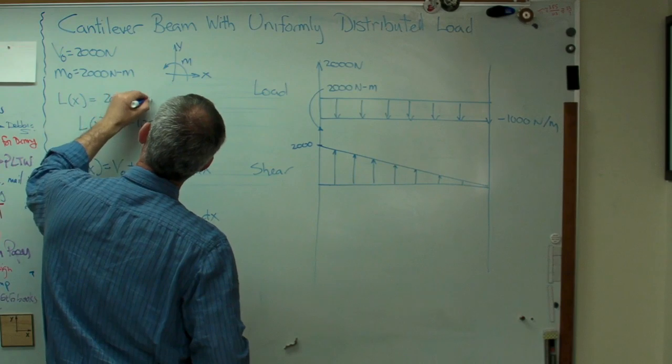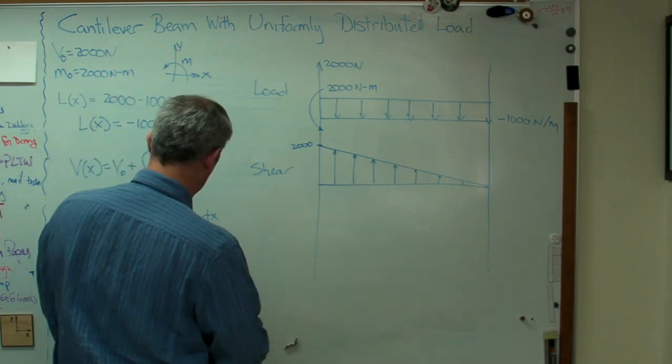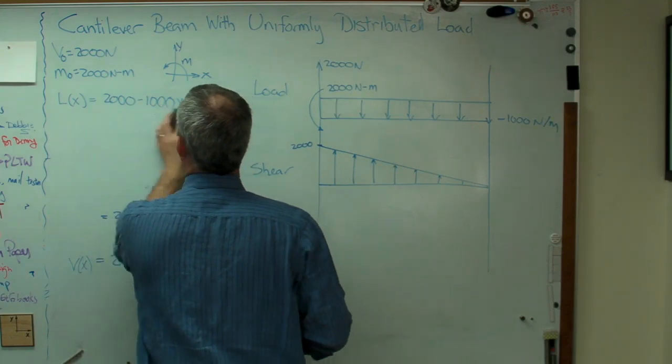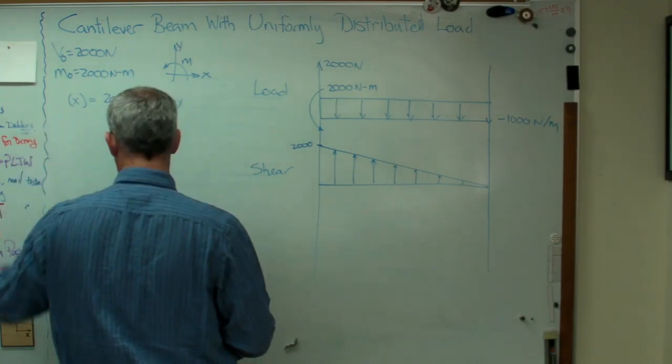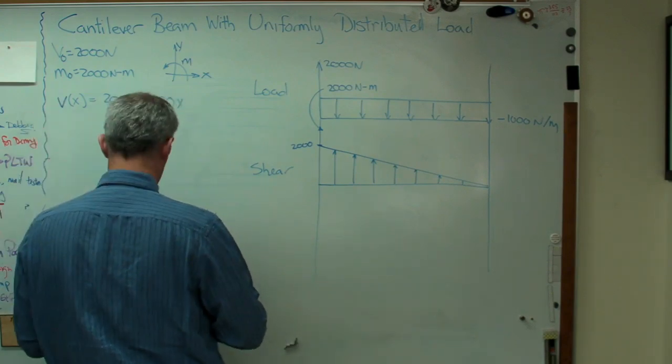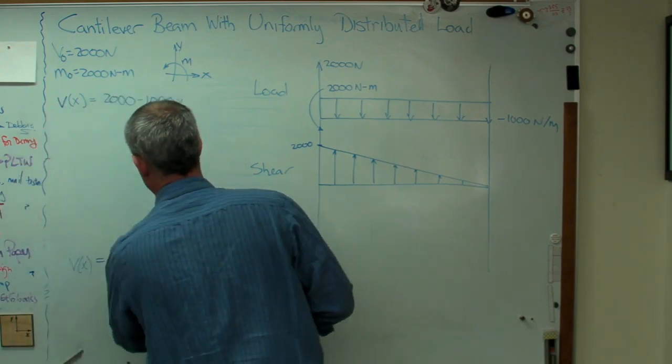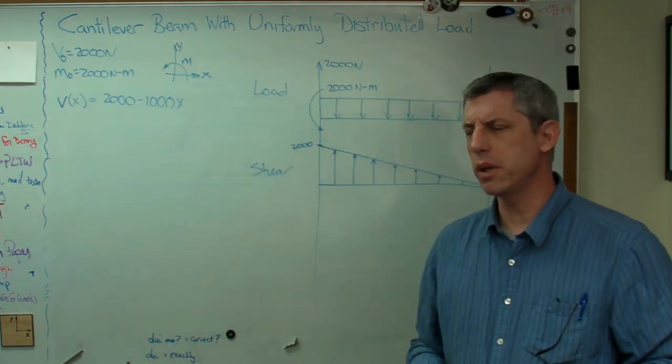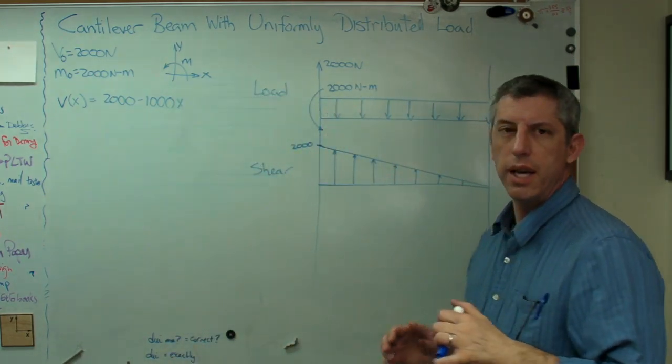Let's write V of x right there. Let's bring it on home here. Let's do the moment diagram. And this is the one that's going to be confusing if any of this is. Let's see. Okay. Now, the last thing we need to know is what's the moment diagram going to look like. Now, here's the problem.